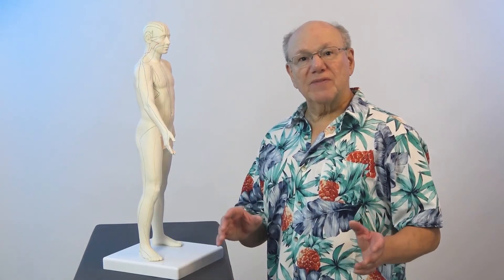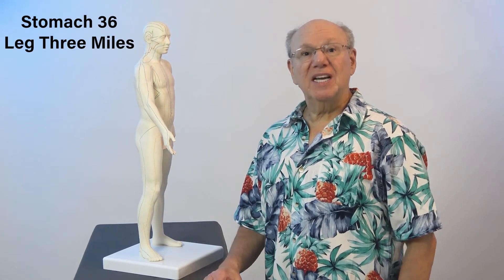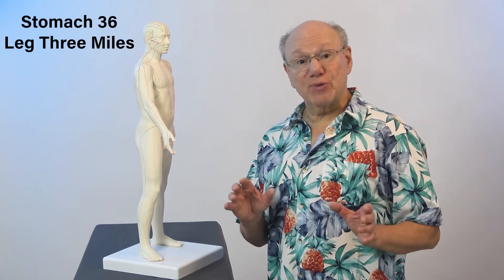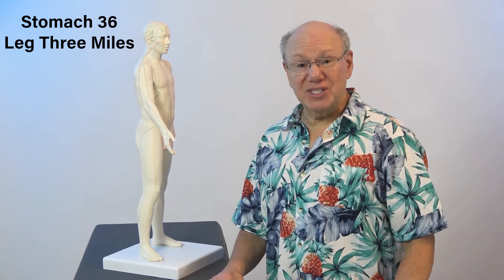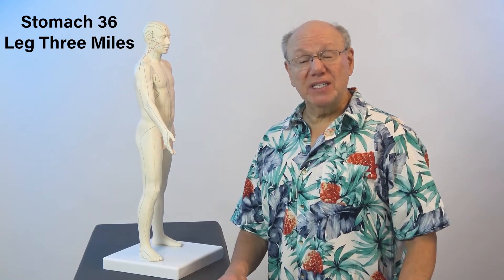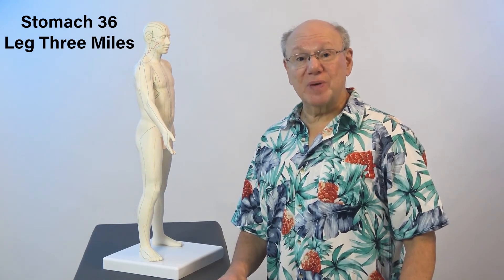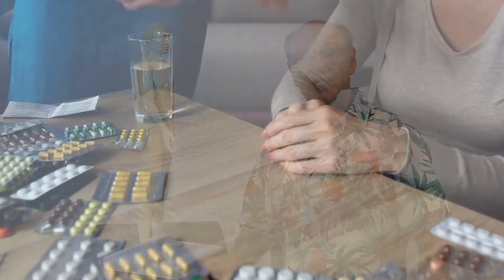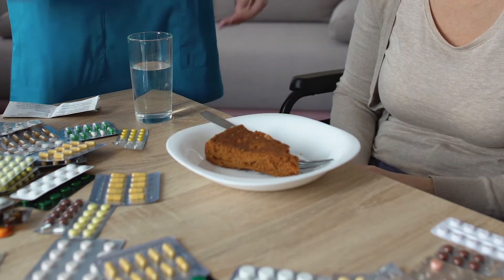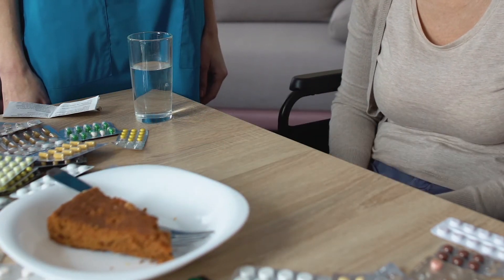The third point of this powerful trio is Stomach 36. Stomach 36 is known as Leg 3 Miles. It is said that in ancient China, when a peasant was so tired he couldn't walk another step, he would activate this point and could then walk another three miles. Stomach 36 is perhaps the most popular acupuncture point of all time. In addition to activating the vagus nerve, Stomach 36 is used for all digestive problems.